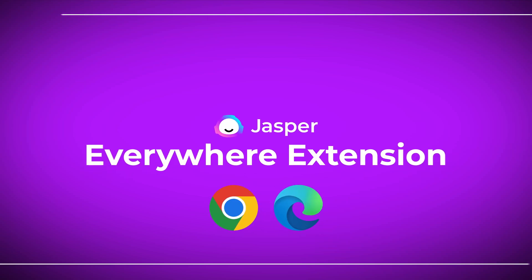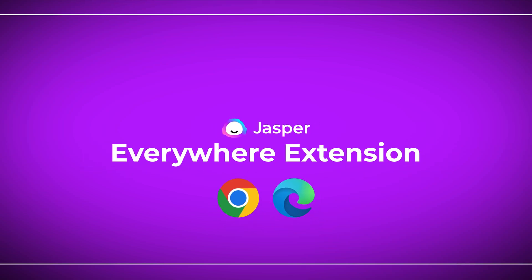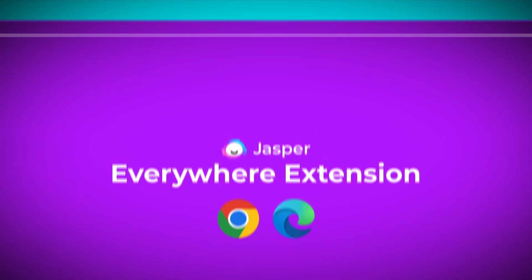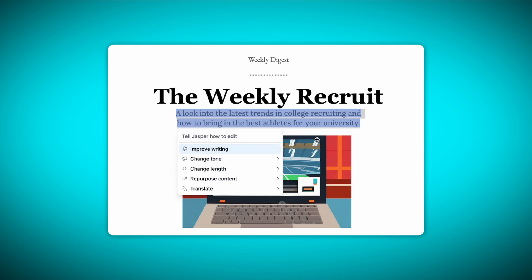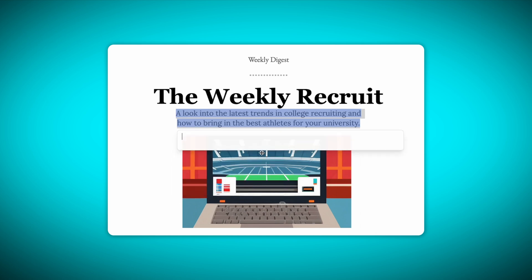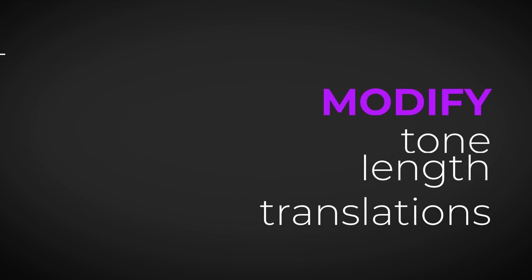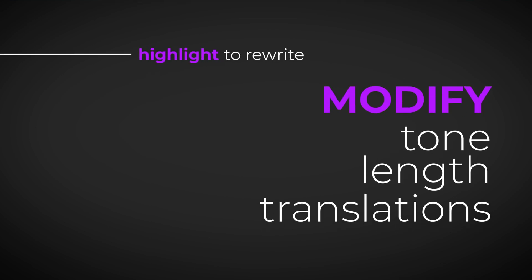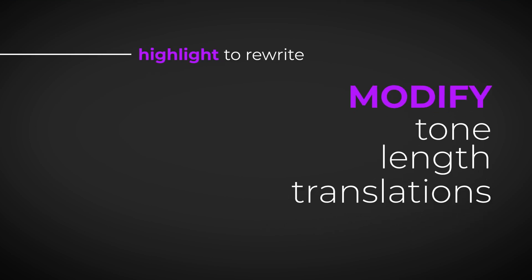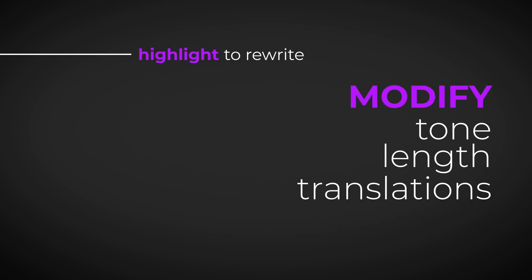Available on Chrome and Edge, the Jasper extension makes it quick and easy to improve your writing. Simply highlight the text you need to rewrite and let Jasper work its magic. You can modify tone and length and even translate content with the extension.